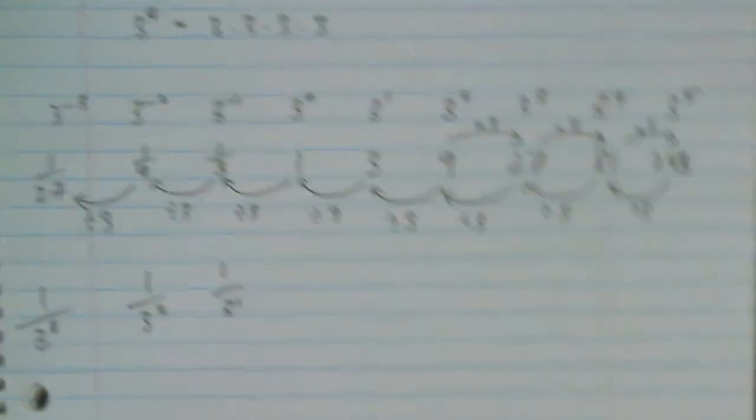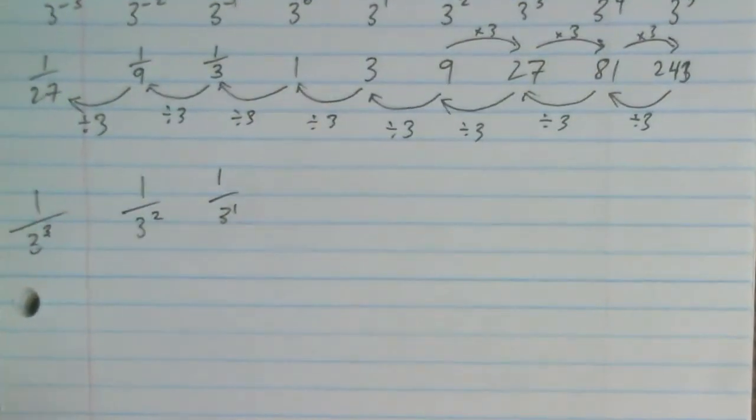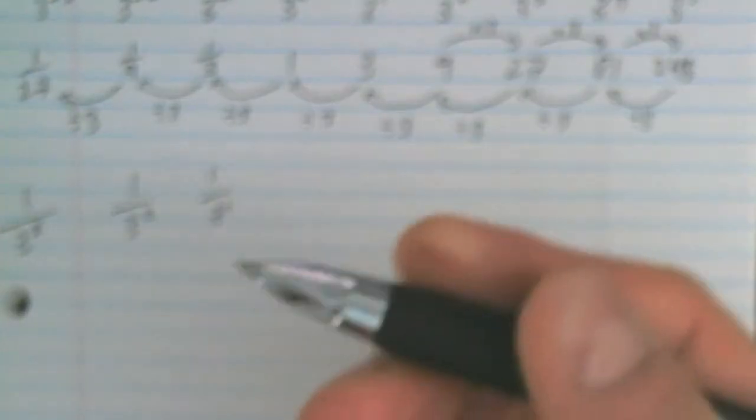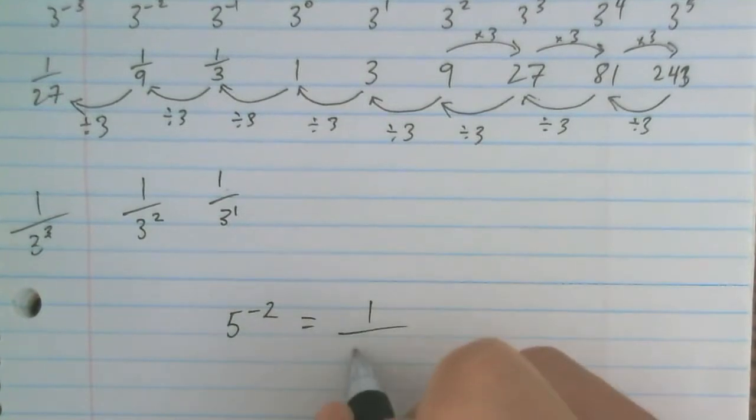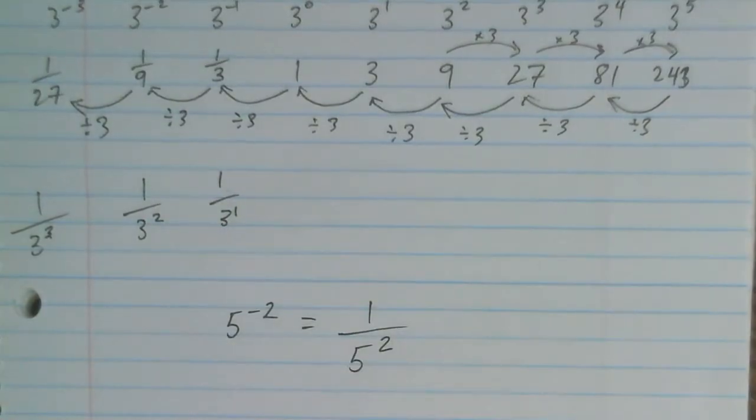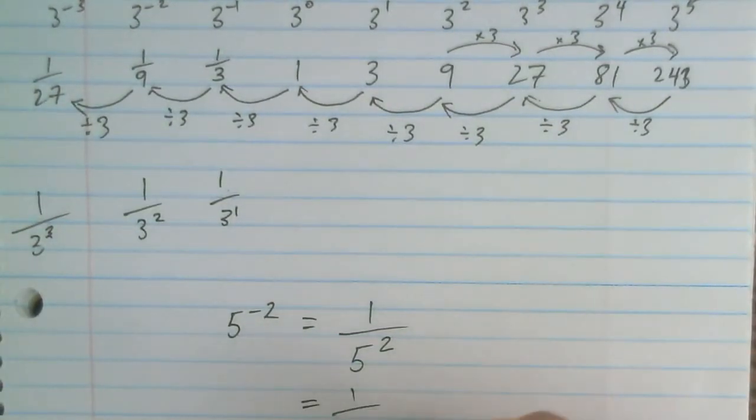So if we generalize this, we can say that if we have a number, let's do another example. Let's say it's 5 to the power of negative 2. That's going to be equal to 1 over 5 to the power of positive 2, which is 1 over 25.